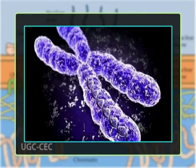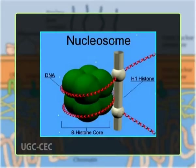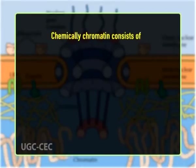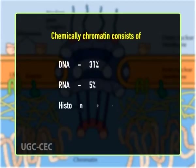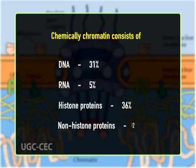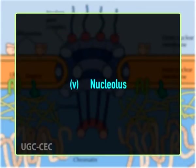Chromatin fibers contain genetic information; they are formed of DNA-histone complexes, the units of which are nucleosomes. Chemically, chromatin consists of DNA 31%, RNA 5%, histone proteins 36%, and non-histone proteins 28%. Number five, nucleolus. The nucleus contains a large, spherical and acidophilic dense granule known as the nucleolus; it is not surrounded by any membrane. The nucleolus makes the ribosomal subunits from proteins and ribosomal RNA.